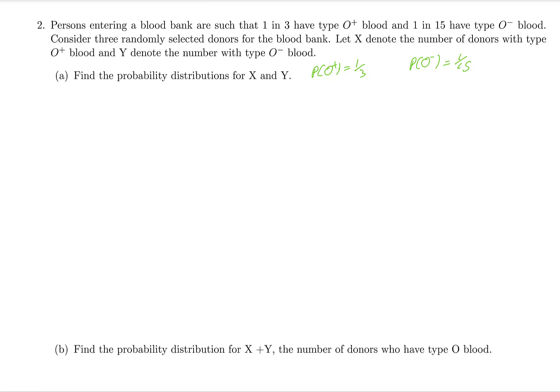Let me explain X first. With only 3 randomly selected donors, the possibilities include: all three O plus, or two O plus and one something else (S), or one O plus and two S, or all three S. Here S represents any blood type other than O plus, since there are other blood groups as well.